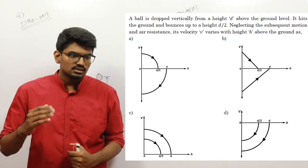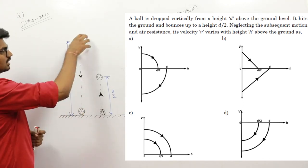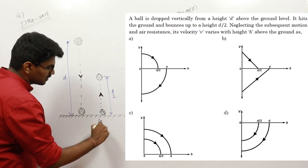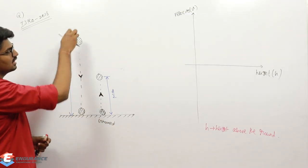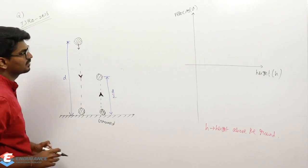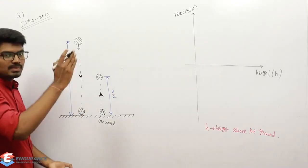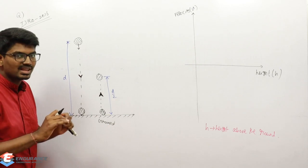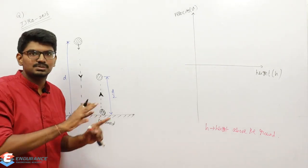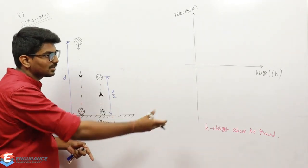They have given that there is a ball which is getting dropped from a distance d from the ground. This ball is going to move downwards. Once it touches the ground it will bounce back to a distance of d by 2. This is the basic statement given. Neglect air resistance — as already discussed, we won't consider air resistance in this topic.